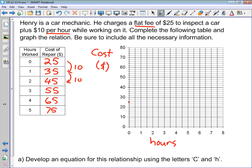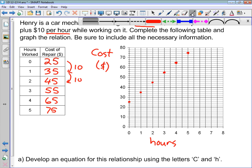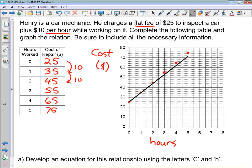So 0, 25, 1, 35, 2, 45, 3, 55, 4, 65, 5, 75. Right about there. And I think it's pretty obvious, now that we've graphed it, that this is a linear relationship. And we could also see that from the table because our first differences were all the same here. Okay, so we've got our graph.